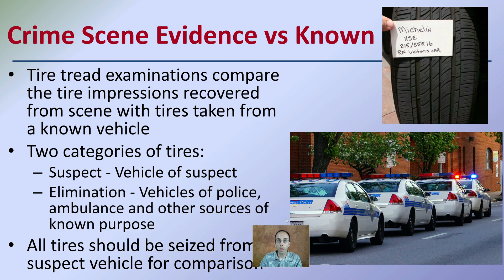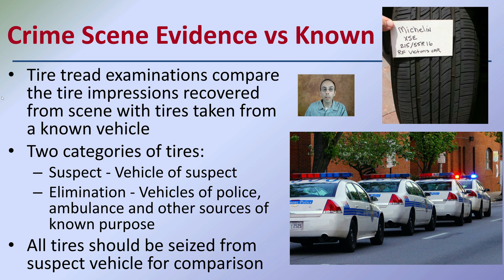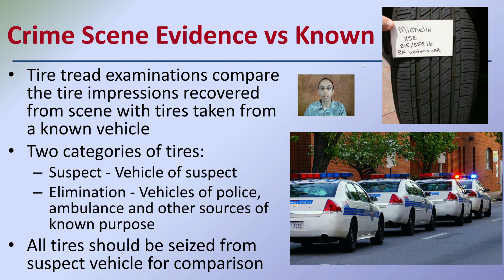Starting with crime scene evidence versus the known. Tire tread examinations compare tire impressions recovered from the scene with tires taken from a known vehicle. Those two categories of tires are the suspect — the vehicle suspected to have been at the crime scene — and vehicles we need to eliminate, such as police, ambulance, or other sources for known purposes. All tires should be seized from the suspect's vehicle to allow an adequate comparison, and pictures should be taken, including what's read on the sidewall.